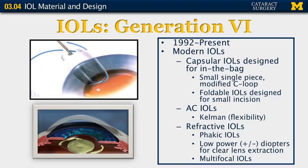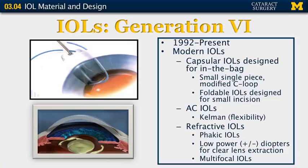Finally, we get to the sixth generation, or the modern currently in-use lenses. These were first developed and introduced around 1992 and are designed for placement into the capsular bag. We have small single-piece lenses and three-piece lenses where the haptic and optic are made of different materials. These lenses can be foldable and placed through smaller incisions into the capsular bag. We still use the Kalman very flexible open haptic anterior chamber lenses when indicated, and we also have different options with refractive lens implants available.